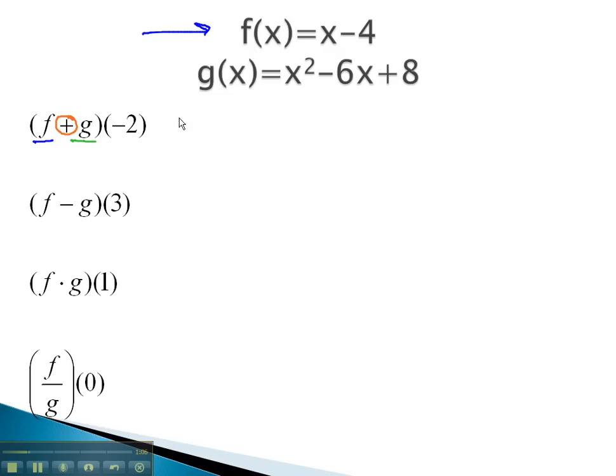First, let's look at f. f of negative 2 simply means we replace the x with negative 2 to get negative 2 minus 4, or negative 6.